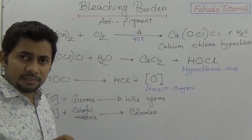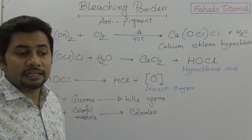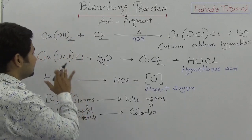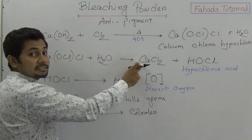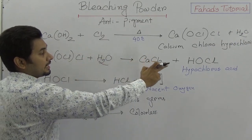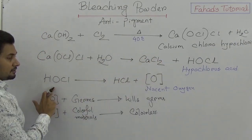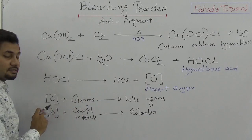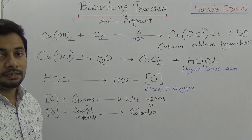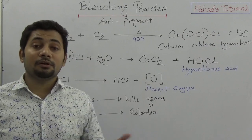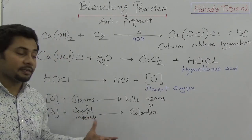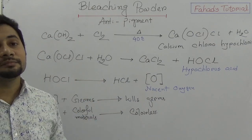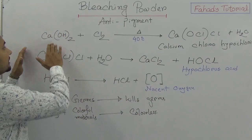When we use bleaching powder anywhere — on a floor, in a basin, in a toilet — we mix it with water. When bleaching powder mixes with water, it produces calcium chloride and hypochlorous acid. This hypochlorous acid breaks into hydrogen chloride and nascent oxygen. The nascent oxygen kills germs and makes colorful materials colorless. This is the cleaning process of bleaching powder.